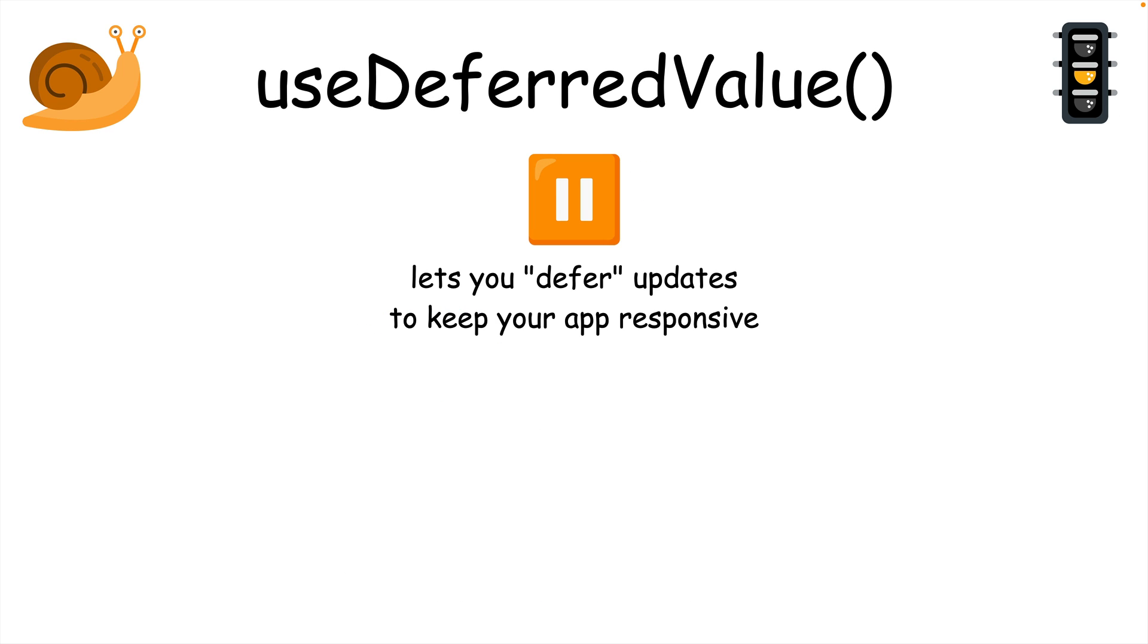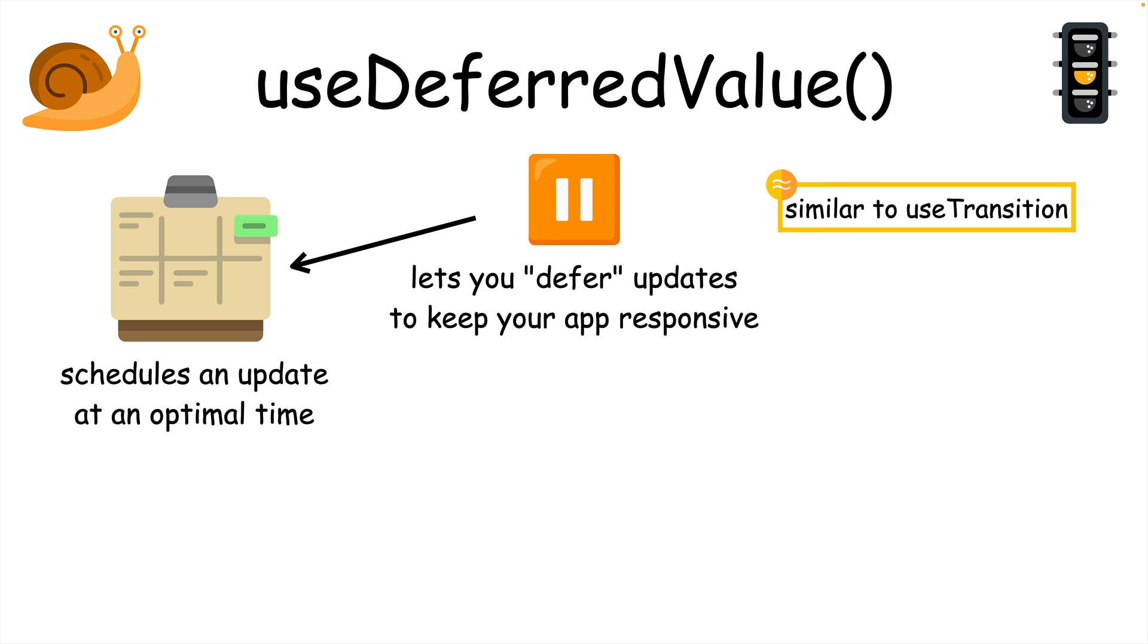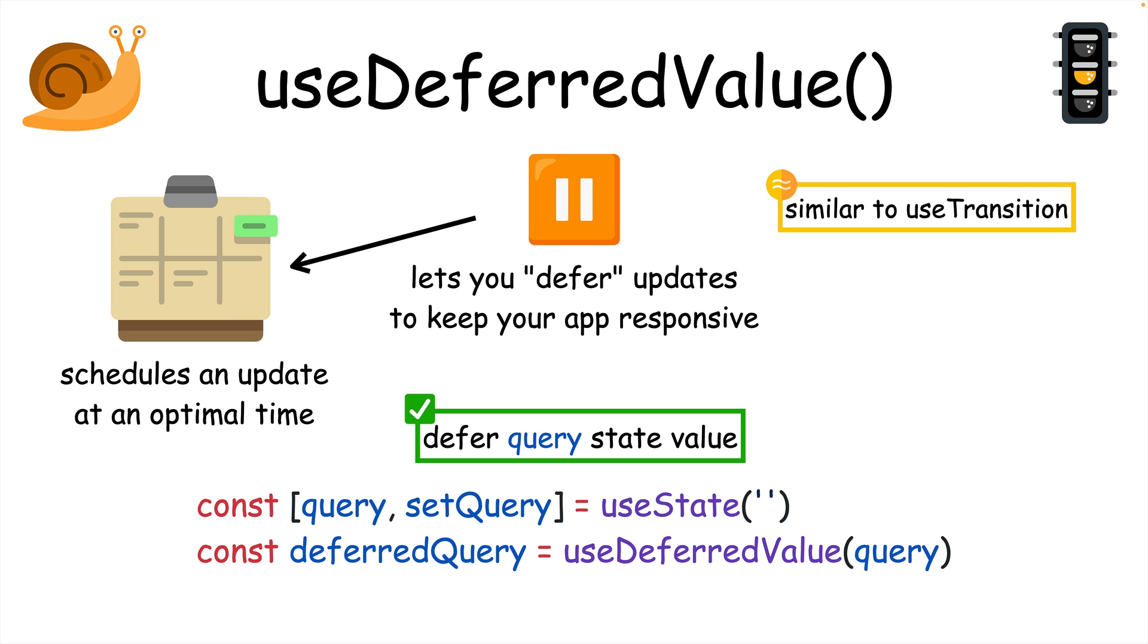useDeferredValue is another transition hook that lets you defer or pause an update to keep your app responsive. It's very similar to useTransition, but we use it to tell React to schedule an update at an optimal time for us instead of us doing it ourselves. To use it, all you need to do is pass the value you want to defer to useDeferredValue.